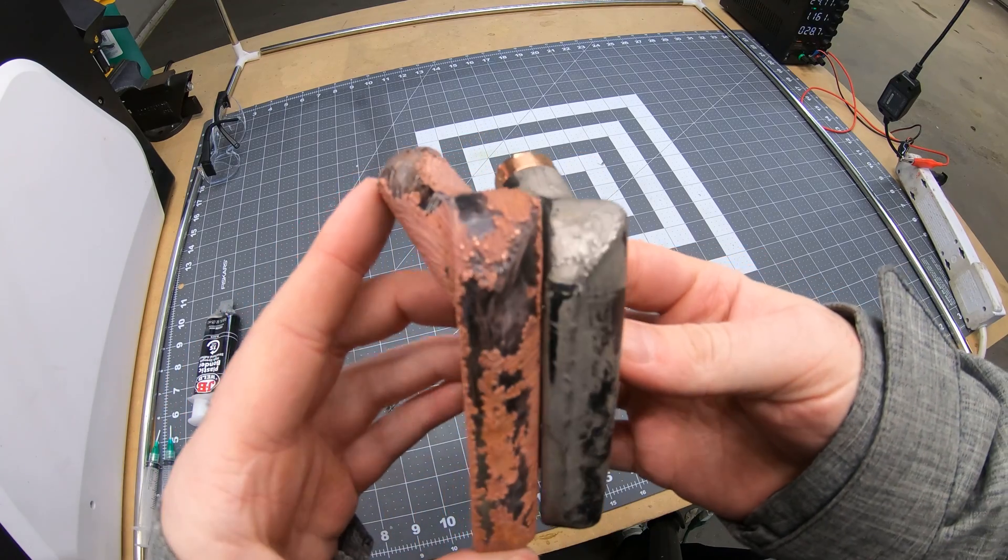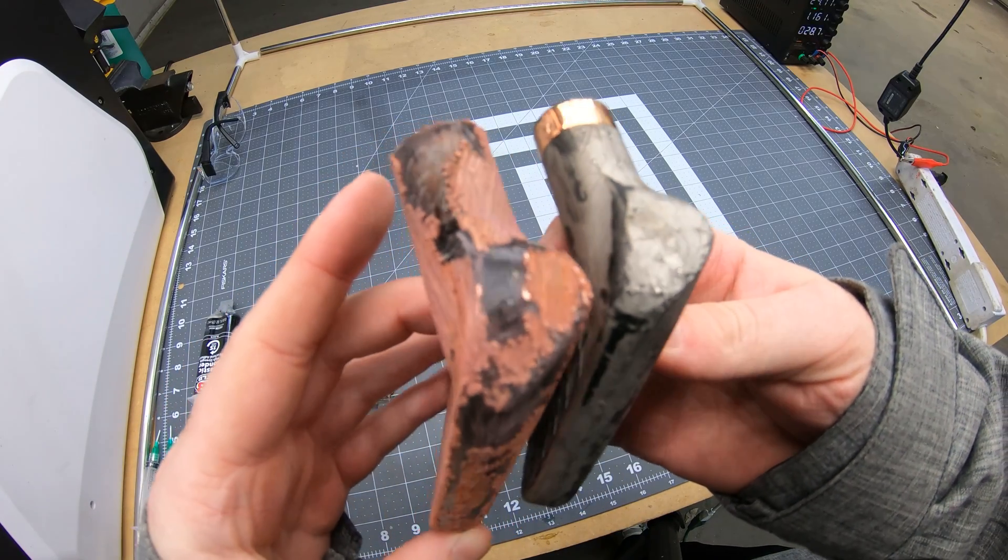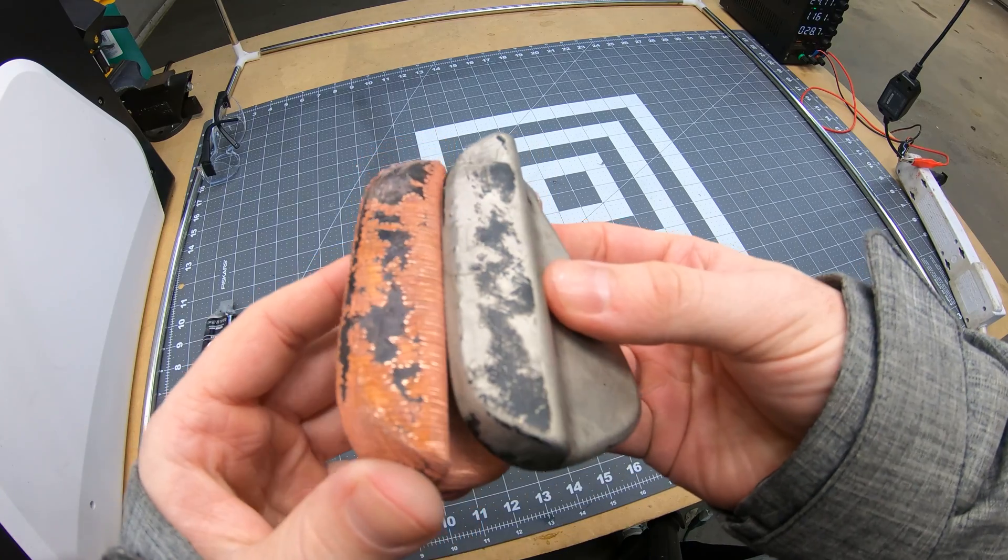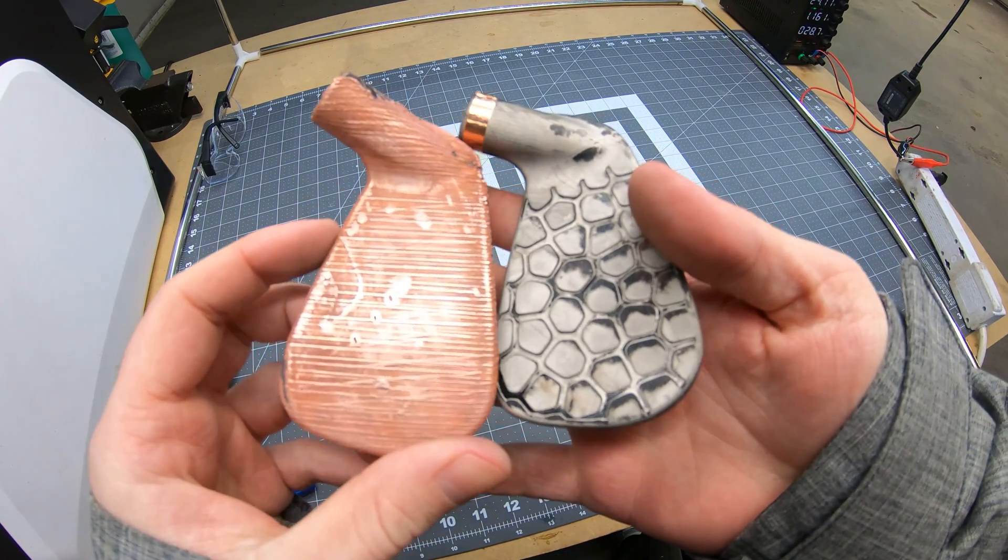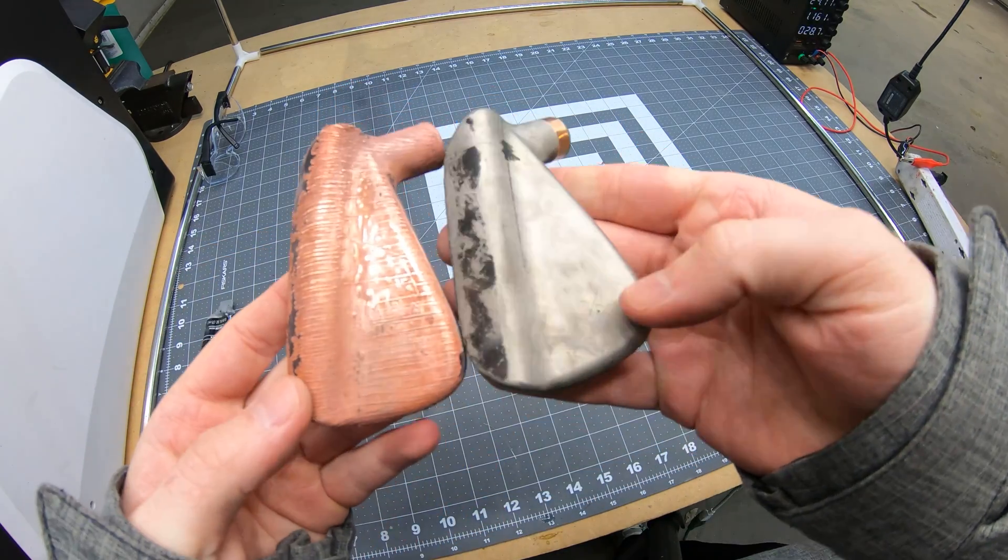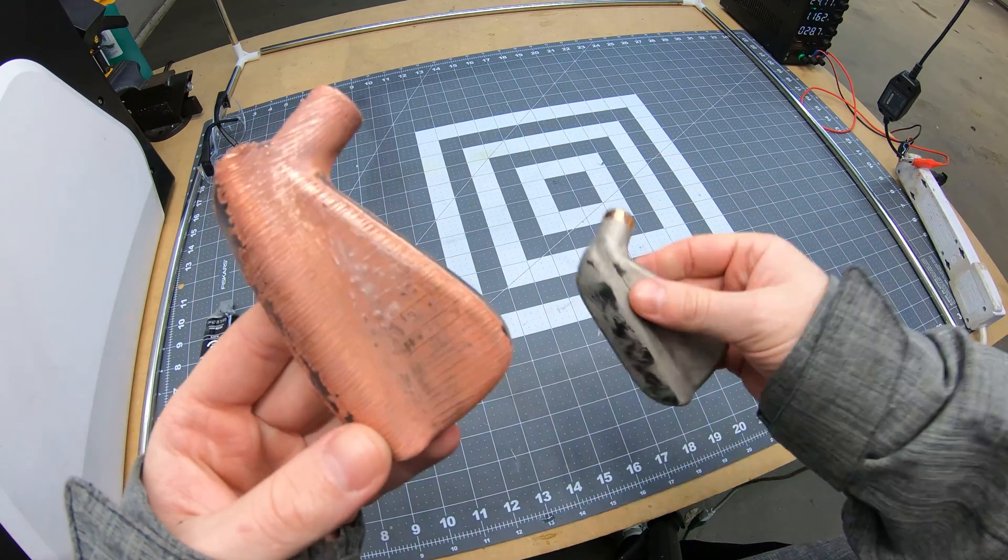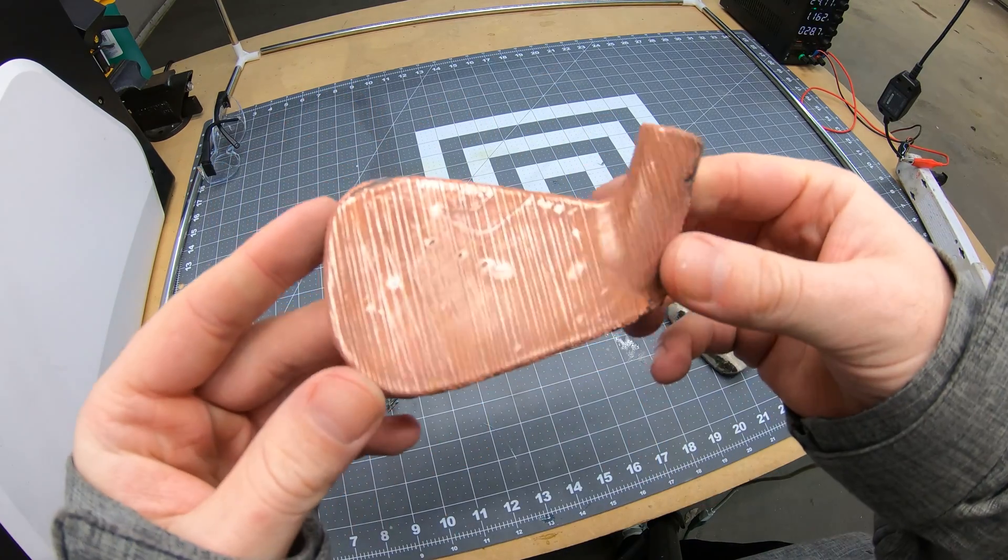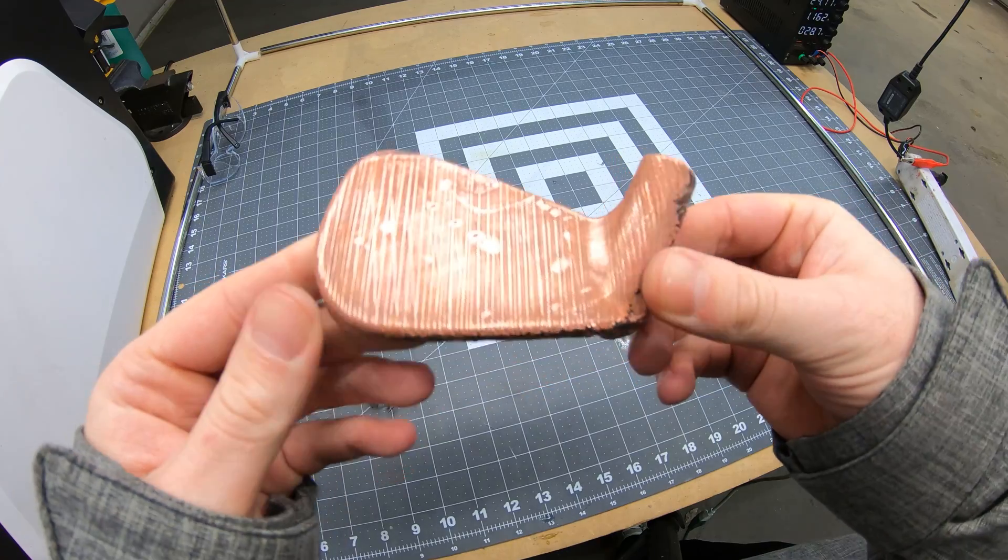Which means the splotchiness in the nickel plating process probably isn't random. But I'm still not sure why some areas plated perfectly and some didn't. Maybe it's geometry based or something like that. I honestly have no idea.